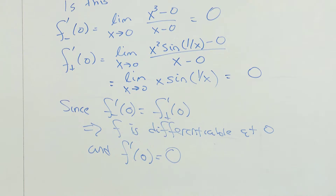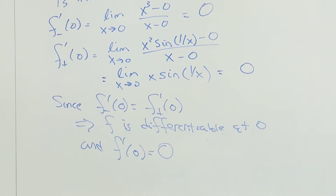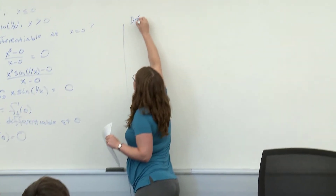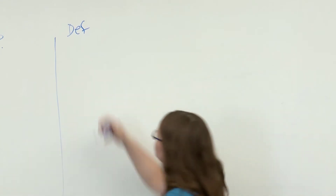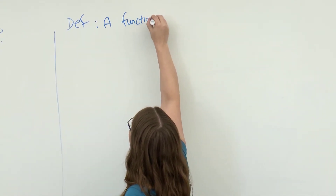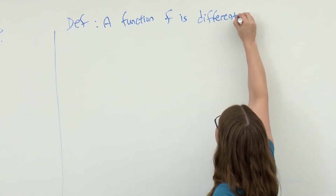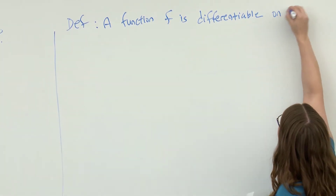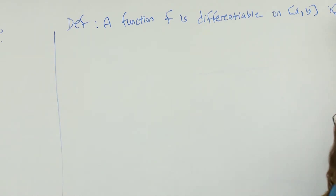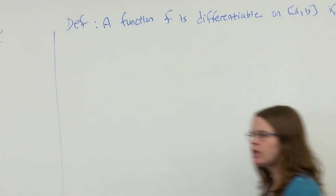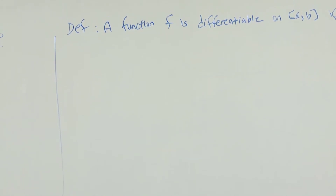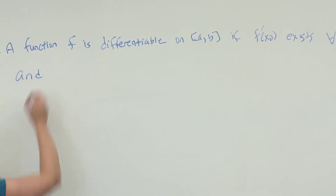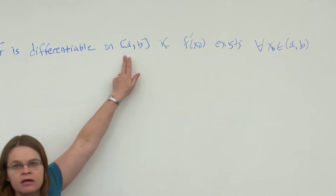We can also talk about differentiability on an interval or a set, very similar to how we define continuity on a set. A function f is differentiable on [a,b] if f′(x₀) exists everywhere in the interior of the interval, and at the endpoints we require the appropriate one-sided derivatives to exist.